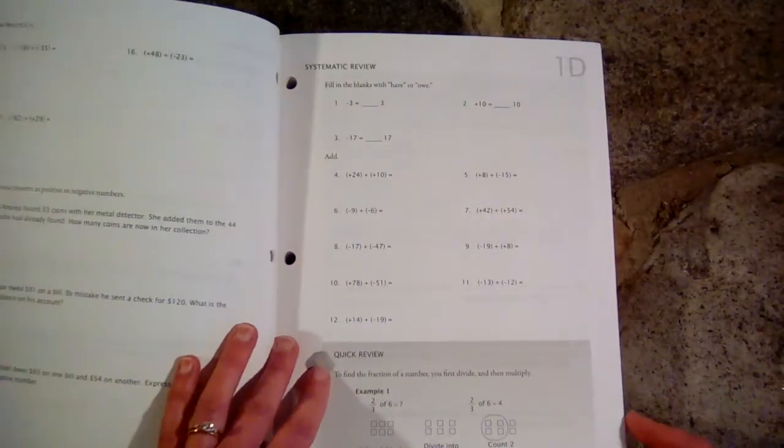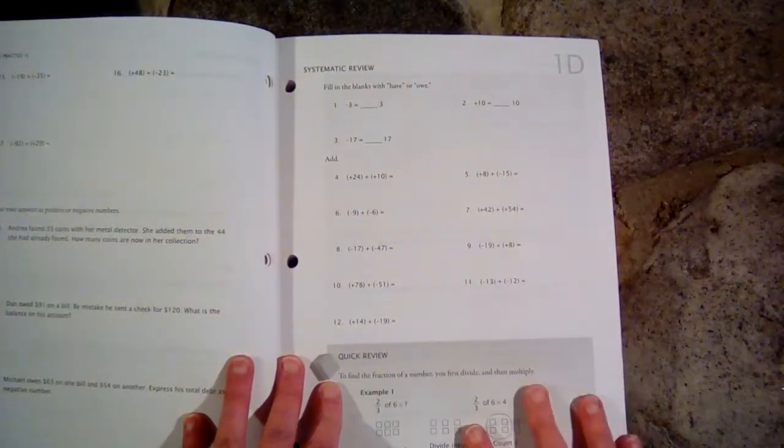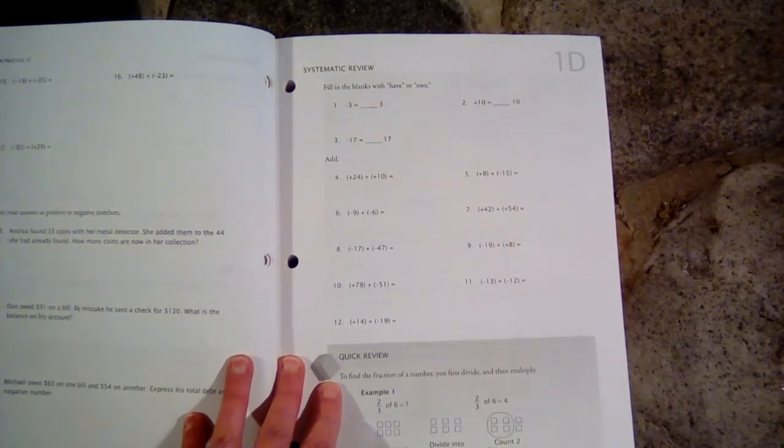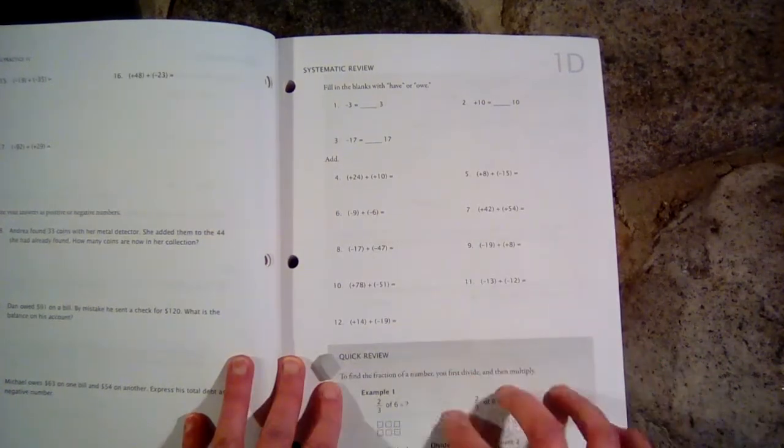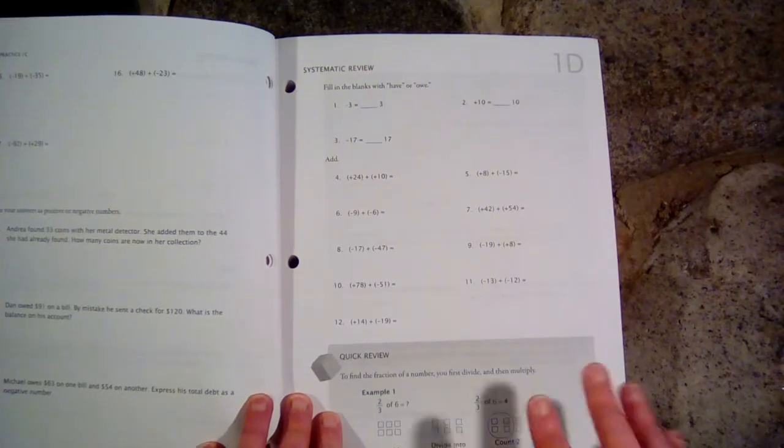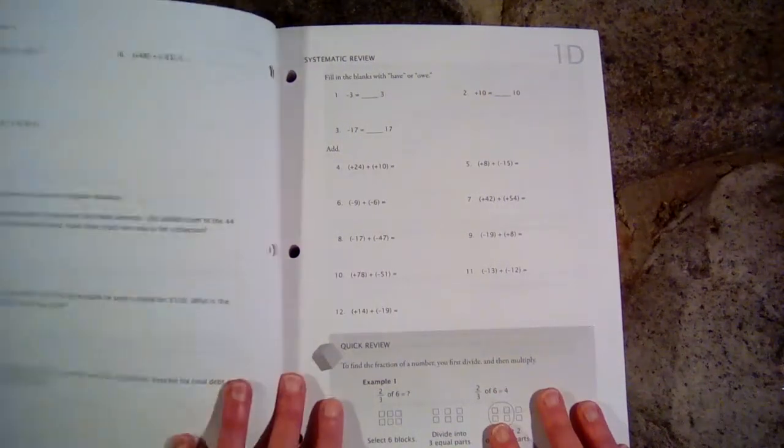So D, E, and F are called systematic review. And these ones review previous concepts learned from previous Math-U-See books or else previous concepts from the current book that you're in. So I consider D, E, and F very important worksheets. And we always make sure we do all three of these, even if we don't do all of the A, B, and C.